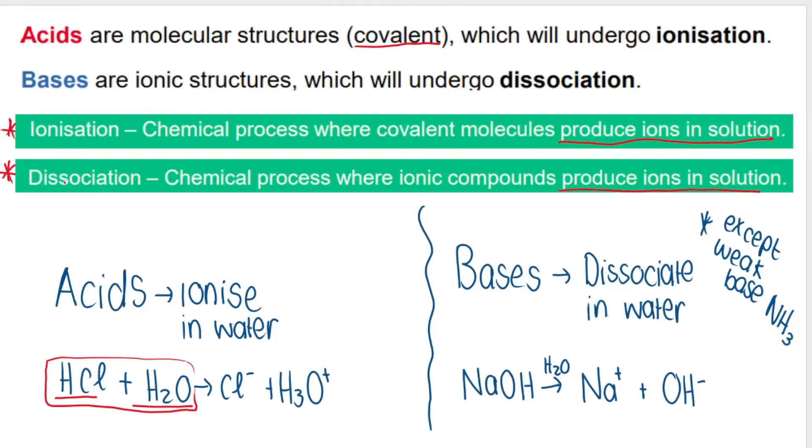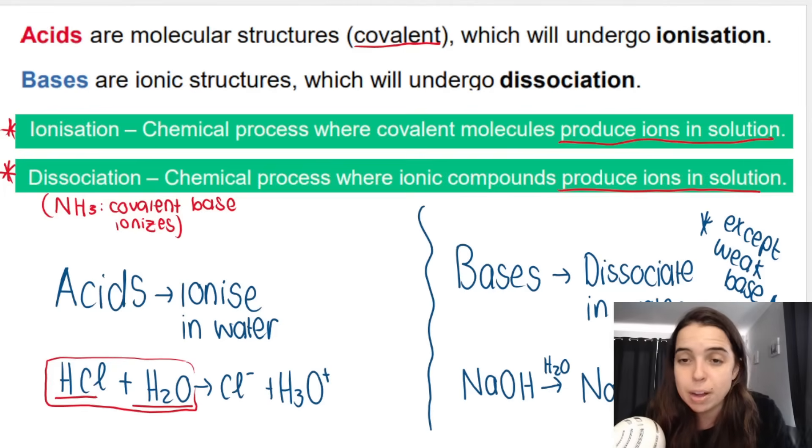We can contrast that with dissociation. Bases dissociate, with the exception of ammonia. That's because ammonia is a covalent base, but we will go through that at another stage. So the covalent base actually ionizes, it's our one exception, but most bases dissociate. And dissociation happens for ionic compounds. Remember, ionic compounds is a metal and a non-metal, they transfer electrons. And what ionic compounds do when we dissolve them in water is that they break, the ions break apart.